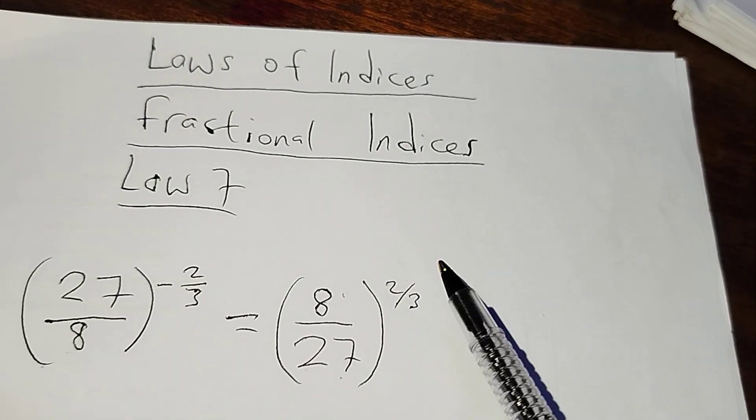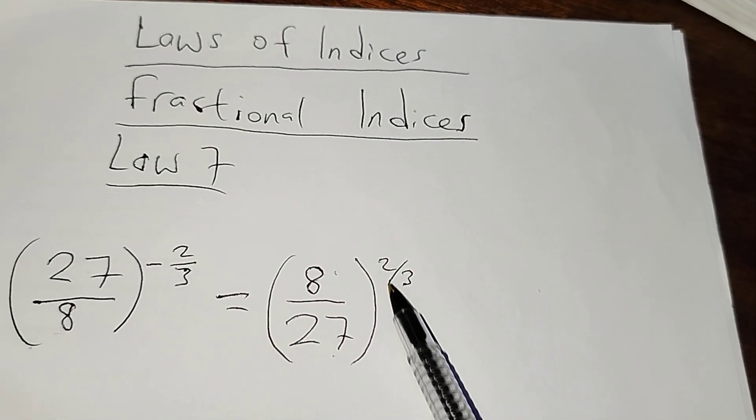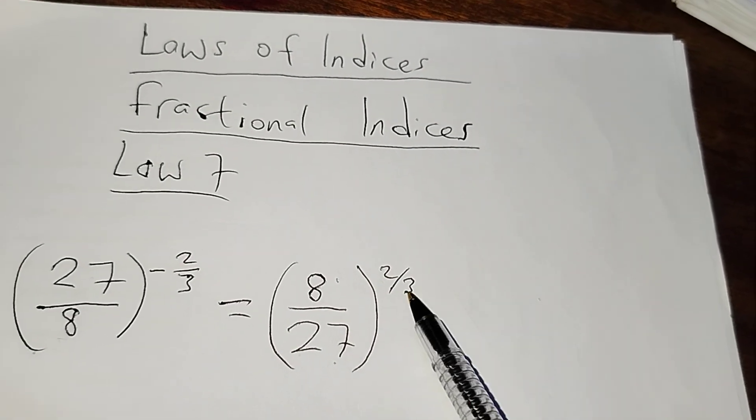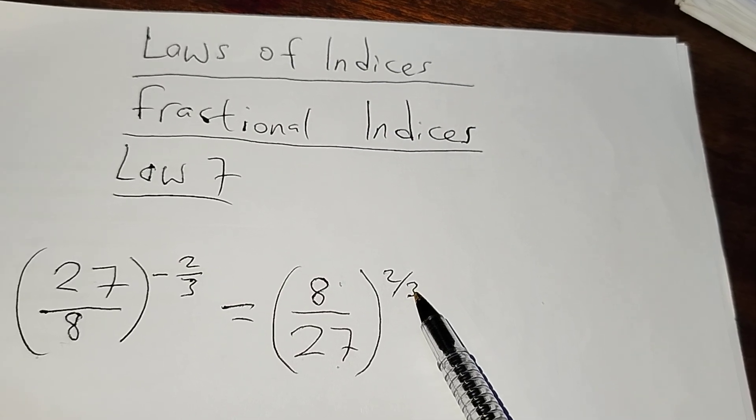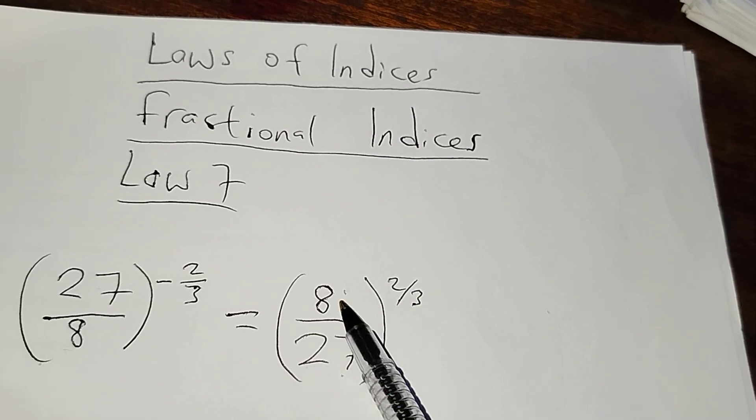So in this case when it appears like this, this 3 here, the denominator, is indicating that I must find the cube root of 8.